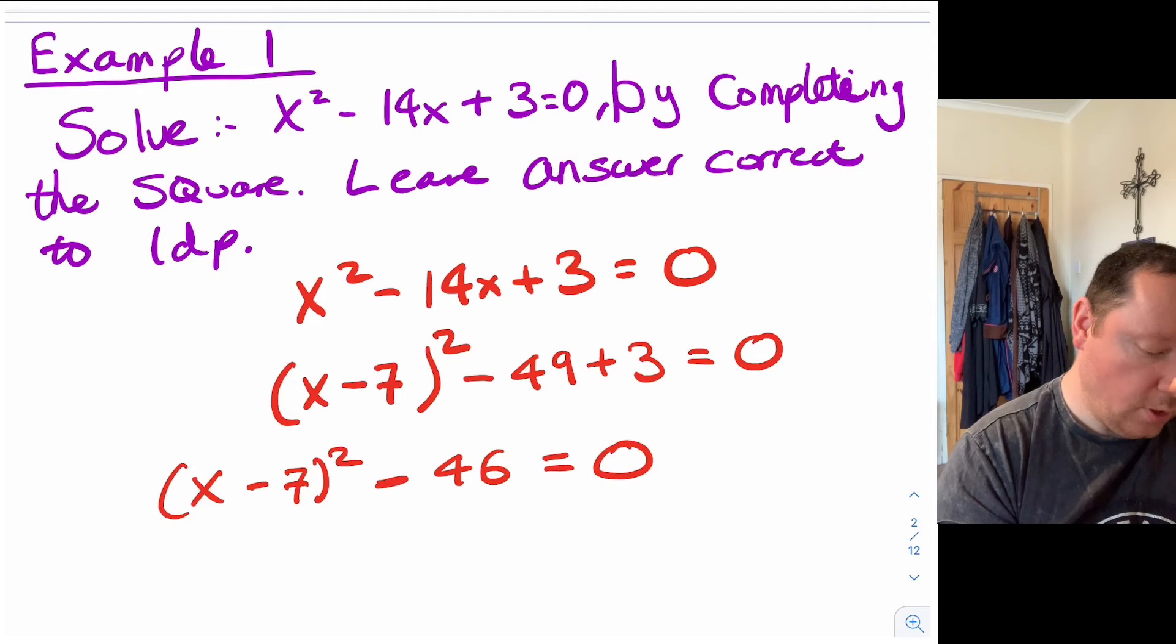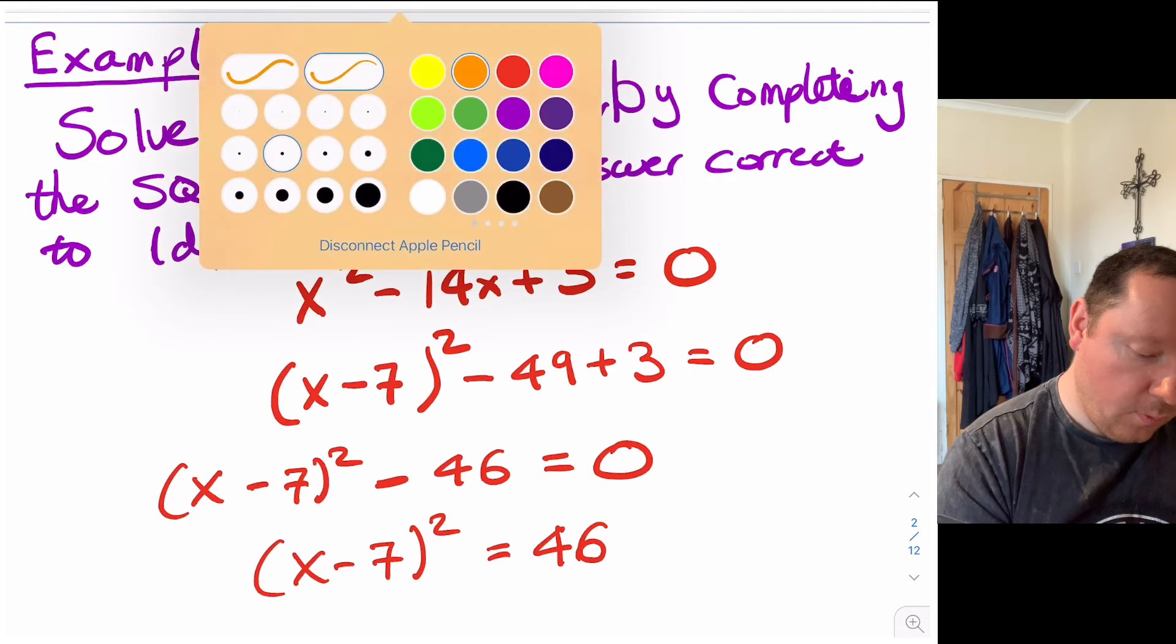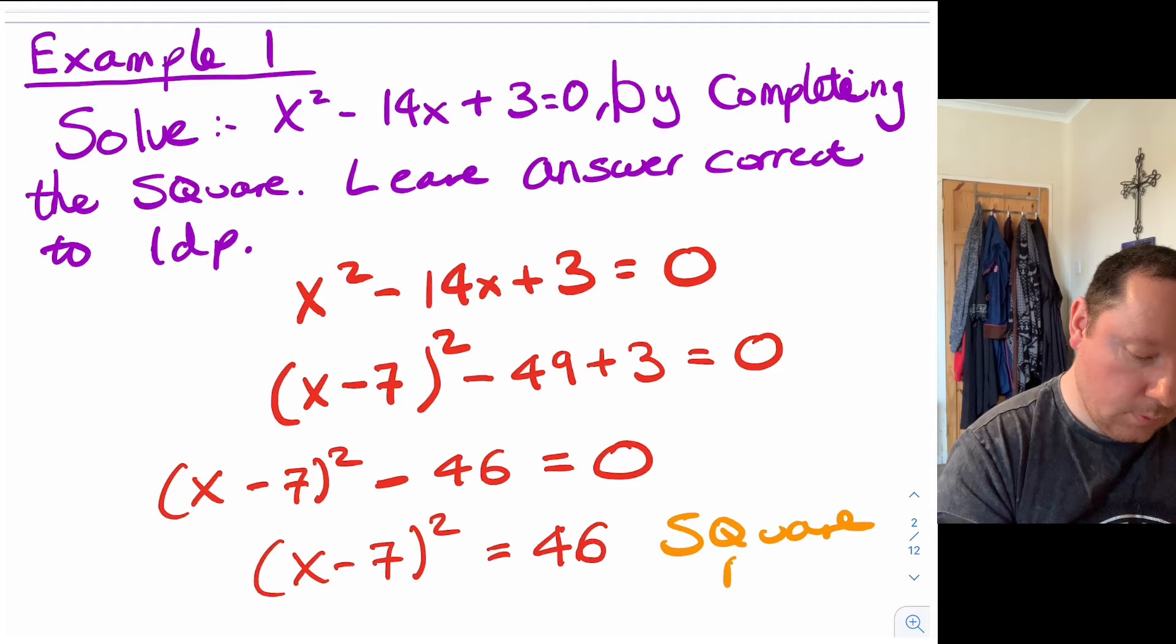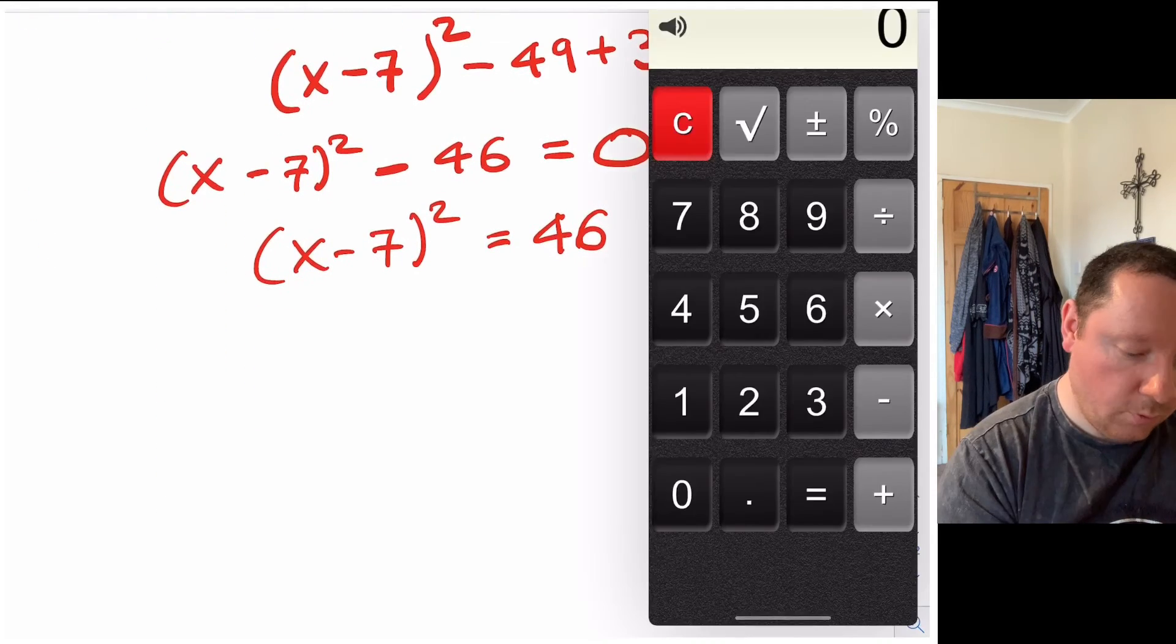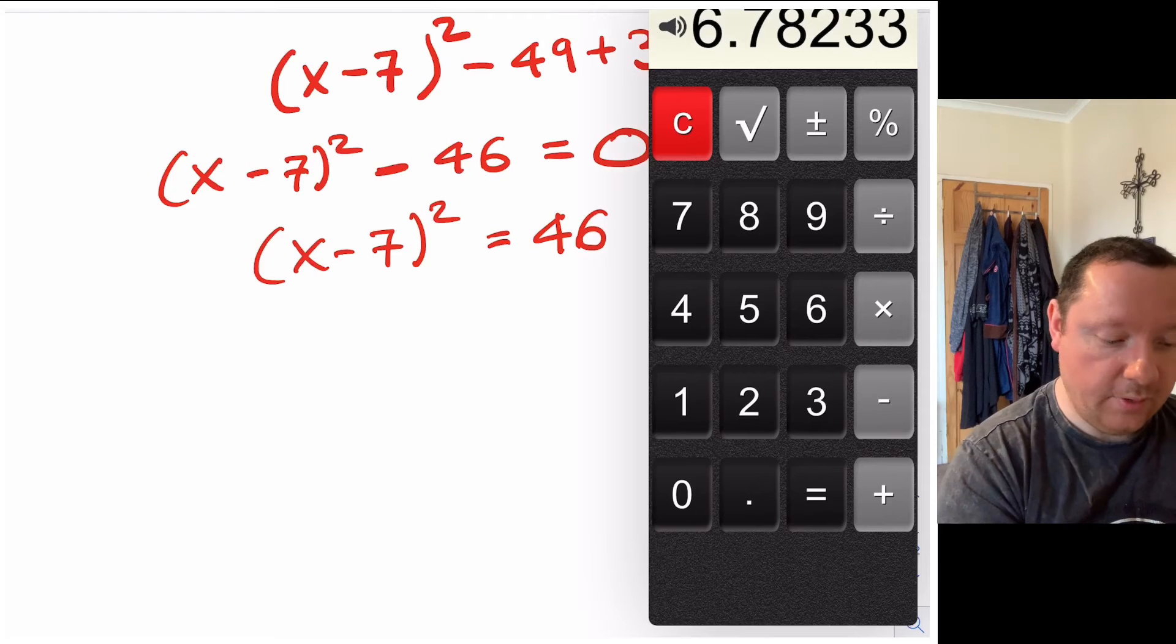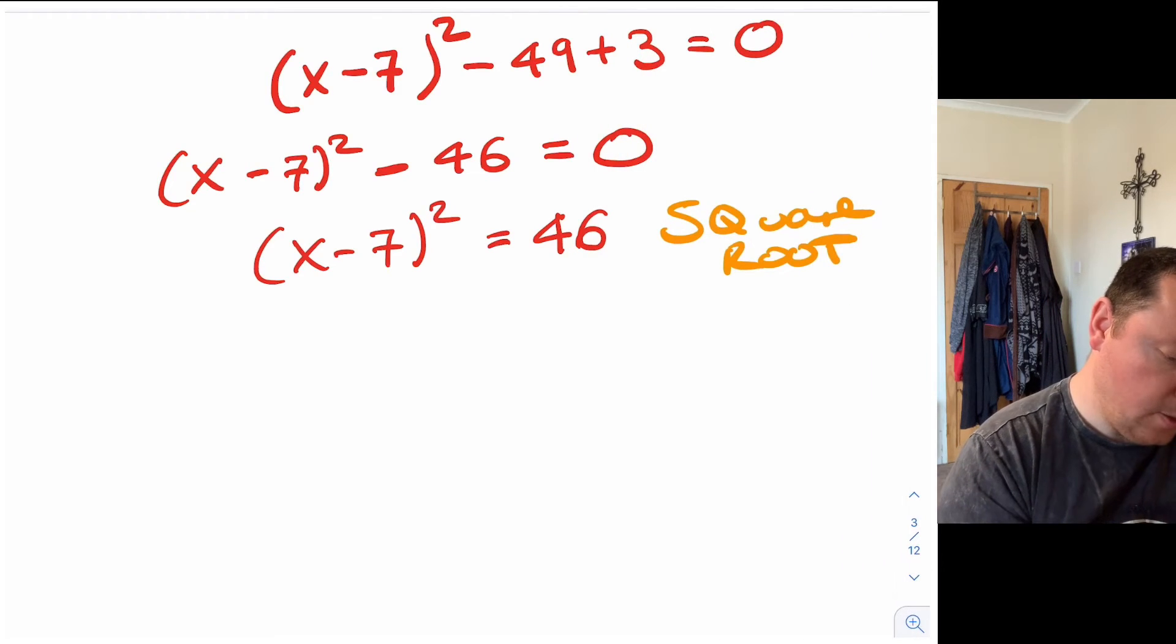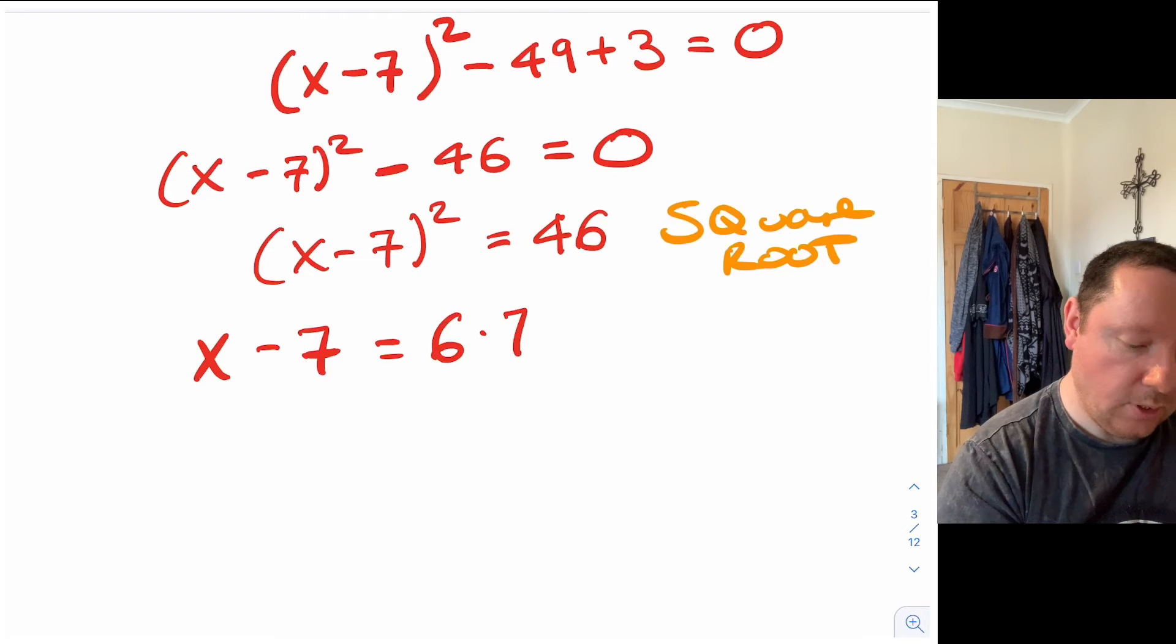So the next step is we move the 46 across so we get x minus 7 squared equals 46. This is the step now where we remember we have to square root because the opposite of squaring here is square root. So we get the square root of 46 is 6.78233. So we get x minus 7, square root now equals the answer we just got 6.78233.